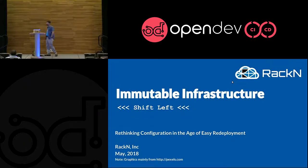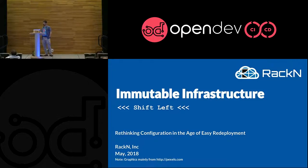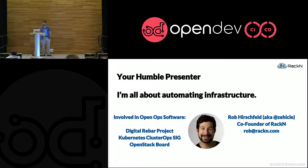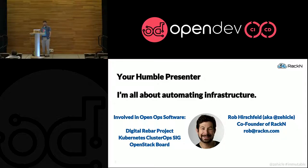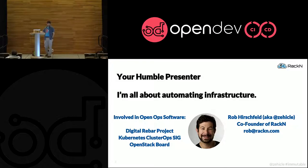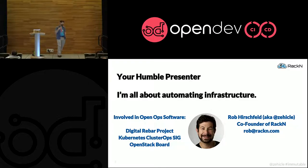This talk is about immutable infrastructure. It is appropriate for the CICD track because immutable infrastructure and CICD seem to be going together like peanut butter and chocolate. It's a lot about security and shifting left. My name is Rob Hirschfeld. I've been involved in the OpenStack community for a long time. I'm also the founder of an open source project called Digital Rebar, which is a physical infrastructure automation provisioning tool, part of what we'll be showing in the demo. I'm also deeply involved in the Kubernetes groups, and my whole career has been about automating infrastructure — zero touch, fully automated infrastructure.